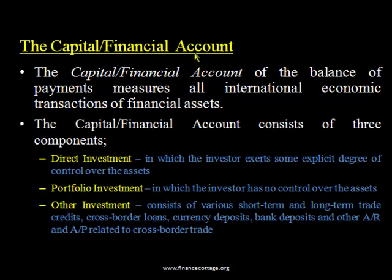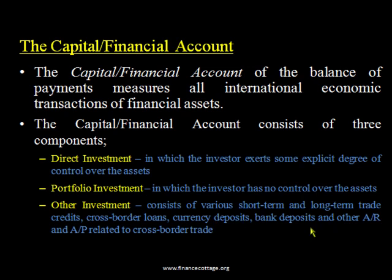The second account is the capital and financial account, which has three major types of transactions. The first is foreign direct investment, in which the investor exerts some explicit degree of control over assets — for example, buying shares or making an investment that gives ownership rights. The second is portfolio investment, where the investment does not involve transfer of ownership. The third is other investment, which includes various short-term and long-term trade credits, cross-border loans, currency deposits, bank deposits, and other accounts receivable and payable related to cross-border trade.